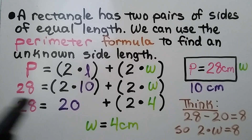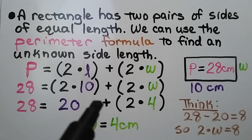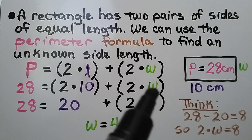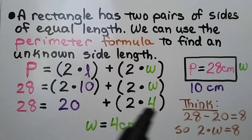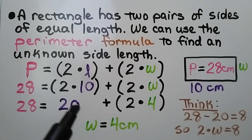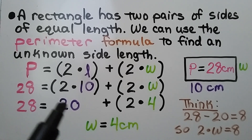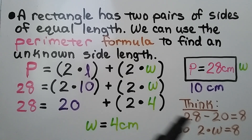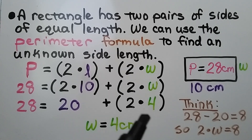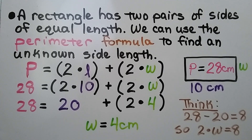We also know the perimeter is 28, so 28 is equal to 20 plus 2 times the width w. We think 28 minus 20 gives us 8, so 2 times w must equal 8 — that would be 4, since 2 times 4 is 8. Because it's in centimeters, we write our answer as 4 centimeters.